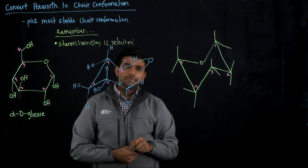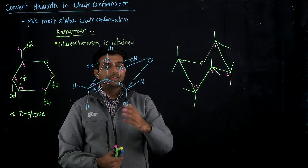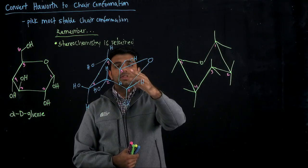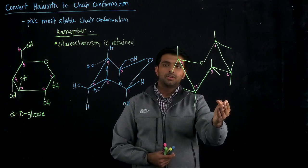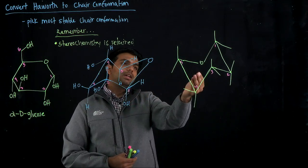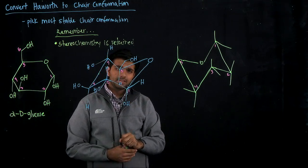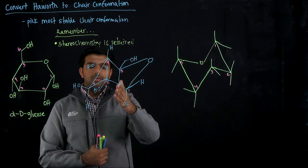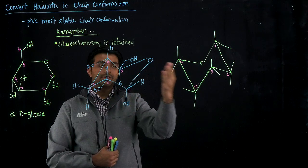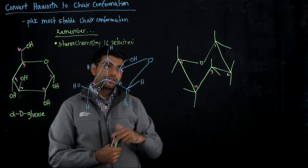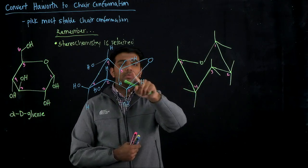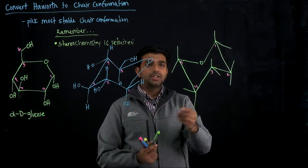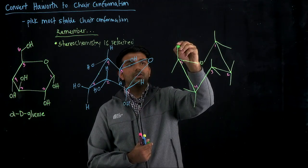We've got the first chair conformation done. Remember, you have a chair-chair flip — in the flip, all your substituents and carbons move counterclockwise. The OH that was in the upper right-hand corner is now in the middle, and the CH₂OH that was in the middle is now going to be in the upper left-hand corner. Stereochemistry is retained, so anything going up on one is going up on the other, but whether something is axial or equatorial flips. Carbon five has a CH₂OH going up — in this chair confirmation that was equatorial, but in the chair-chair flip, going up is axial, so we attach our CH₂OH axially.